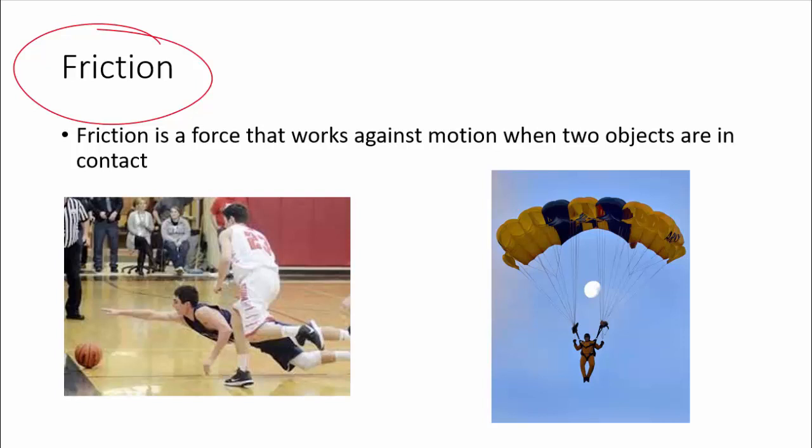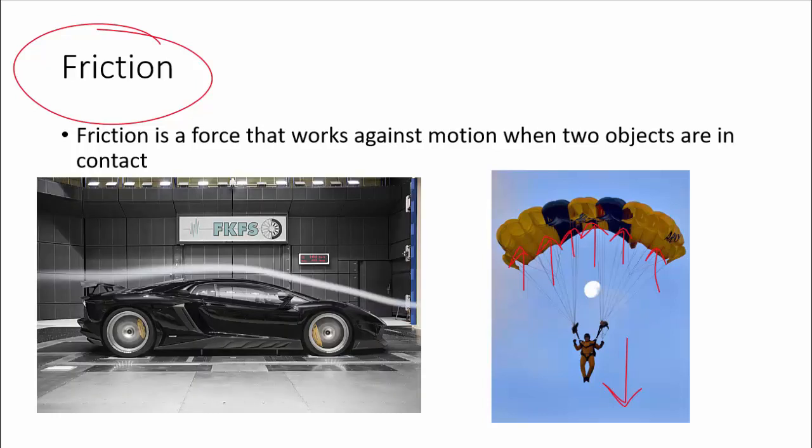But friction isn't only between two solid objects. It can also happen with a gas. The reason the parachute works is because it's hitting all of the air particles. So gravity is pulling him down, but the air particles are hitting his parachute. And that's an example of friction. What makes a car go fast?